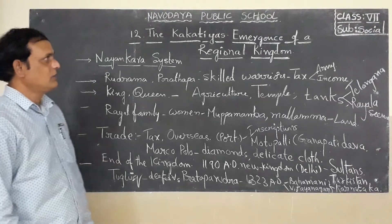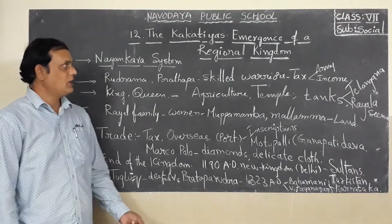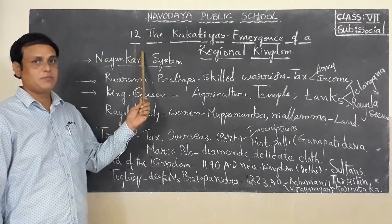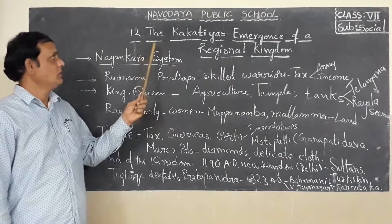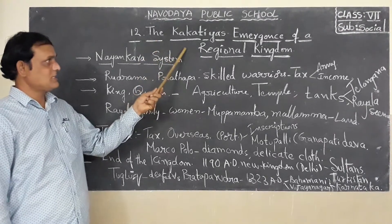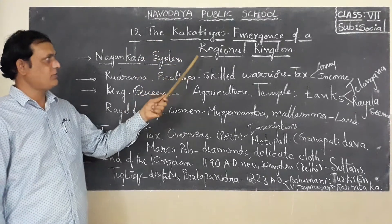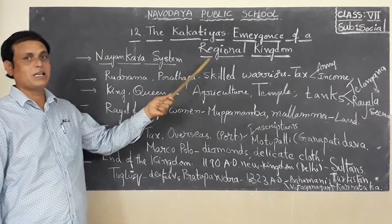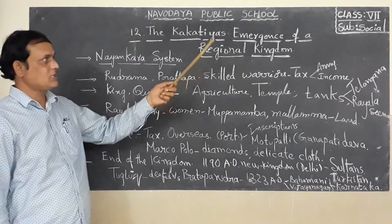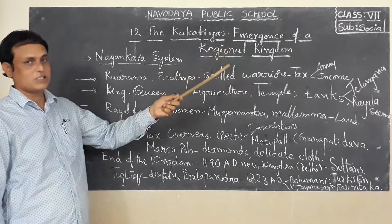Good morning, children. We are in the 12th lesson — the Kakathiyas: emergence of a regional kingdom. This is the 7th class social studies lesson.